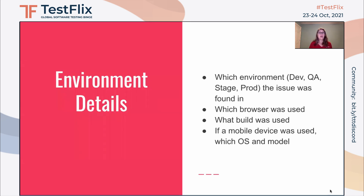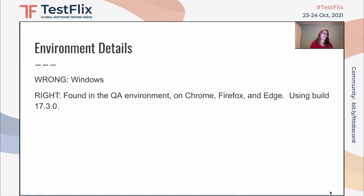Environment details. Important things to include here would be which environment the issue was found in, what browser was being used, what build was used, and if a mobile device was used, which OS and which model. So for a wrong example, it would be just to say 'Windows' — lots of people are using Windows, and is the bug found everywhere in every single build? The right way to list the details would be: 'Found in the QA environment on Chrome, Firefox, and Edge using build 17.3.0.'